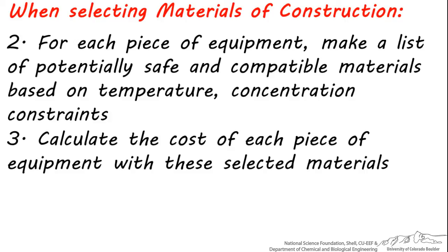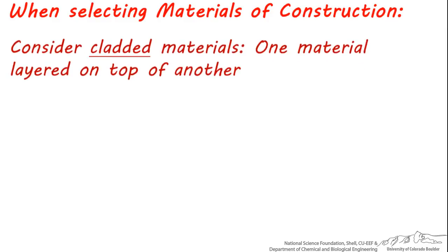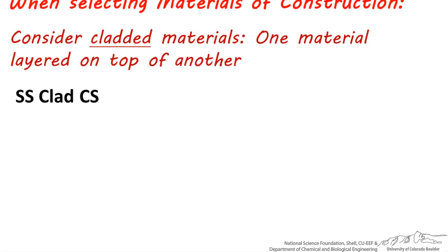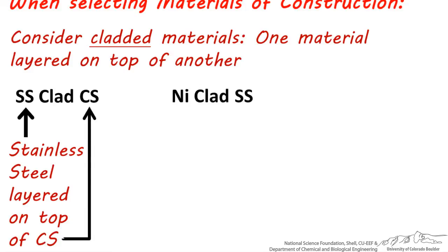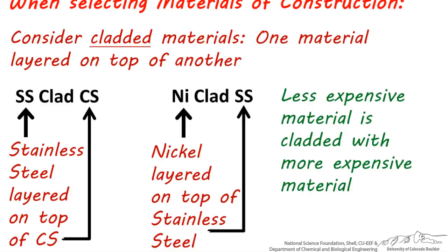Most design textbooks provide tables or software to help you calculate the cost of units with different materials of construction. If you're not sure whether it's necessary to use a more expensive material because the stream seems to be on the borderline of being reactive or damaging, consider using cladded materials. Cladding is when one material is on top of another as a protective layer. Common cladded materials in the chemical process industry include stainless clad carbon steel and nickel clad stainless steel. Notice that the less expensive material is always cladded with a more expensive layer, and choosing a cladded material can save a lot of money on initial costs compared to using a non-cladded, more expensive unit.